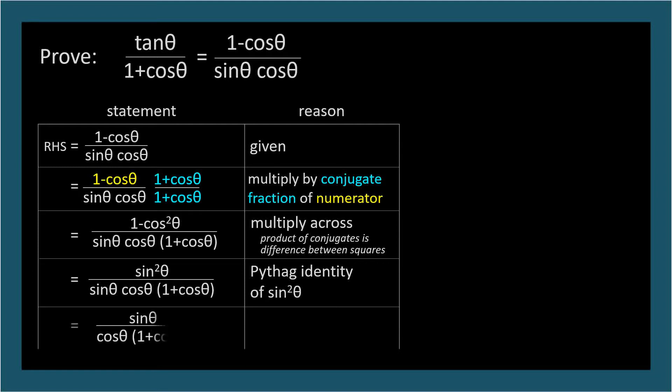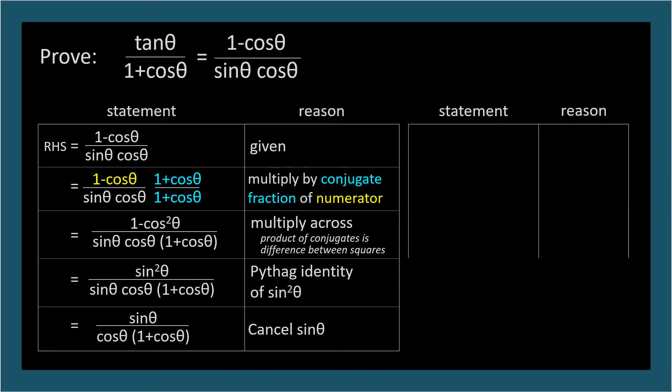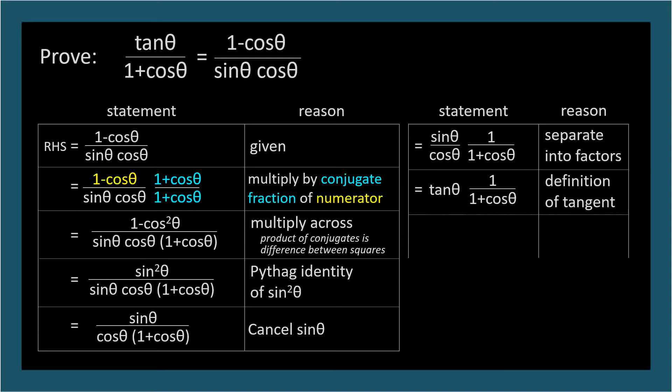Next, we can cancel sine theta from the numerator and denominator. It's often helpful to keep an eye on the target. In this case, we're trying to reach tan theta over 1 plus cosine theta. So let's factor our fraction into the product of two fractions. Sine theta over cosine theta is one fraction, and 1 over 1 plus cosine theta as the other. Sine over cosine is the definition of tangent, and simplifying the resulting product yields the right-hand side.